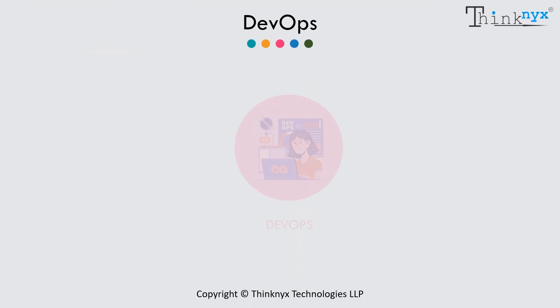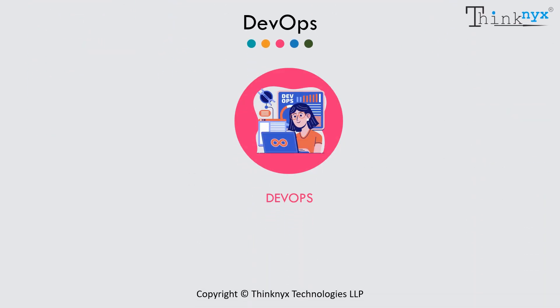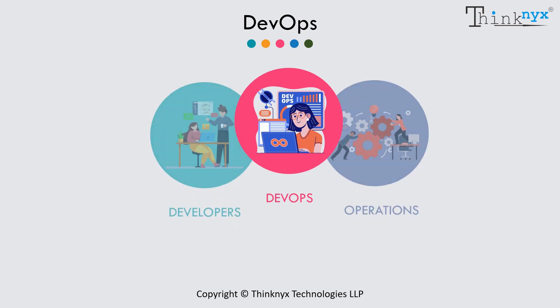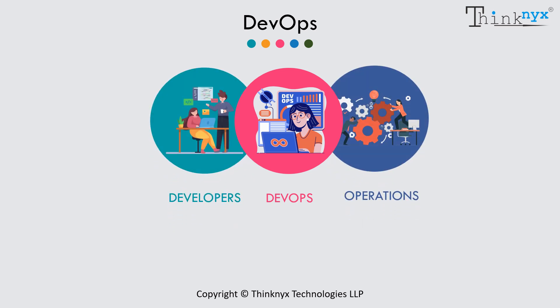Now let's dive into DevOps. DevOps unifies development and operations teams for seamless collaboration. Traditionally, developers wrote the code and the operations team was responsible for deploying and managing it. This often led to a disconnect — developers might not fully understand the operational challenges, and the operations team might struggle with deploying changes quickly.